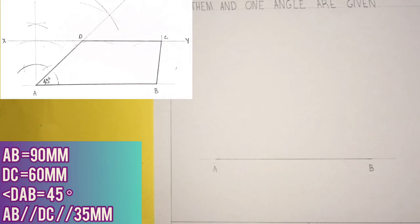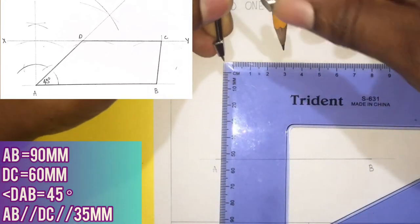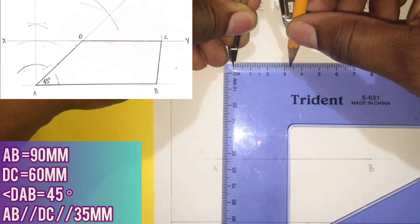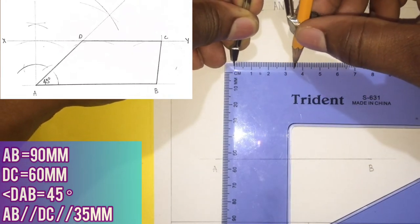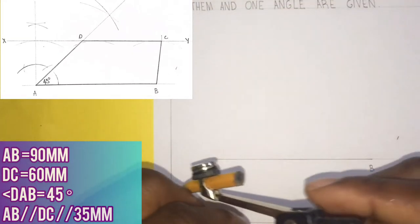I will now draw a line that is parallel XY and at a perpendicular distance of 35 millimeters away from my line AB. In order to do this I will open my compass to 35 millimeters and I will scribe some arcs above the AB line.